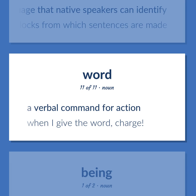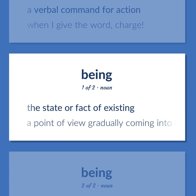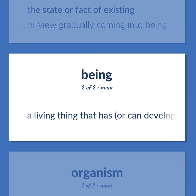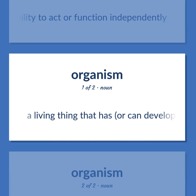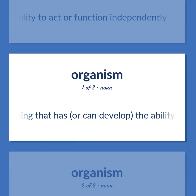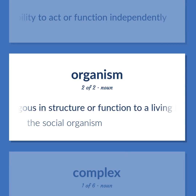BEING — The state or fact of existing. A point of view gradually coming into being. A living thing that has or can develop the ability to act or function independently. A system considered analogous in structure or function to a living body — e.g., 'The social organism.'